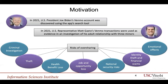Motivation. There are several anecdotal incidents wherein oversharing personal information online has proved to be very dangerous. For example, last year the US President Joe Biden's Venmo account was discovered using the app search tool, revealing a network of his private social connections and White House officials, posing national security risks. Similarly, last year US representative Matt Gaetz's Venmo transactions were used as evidence in an investigation of his adult relationship with three minors. In addition, there are many other news reports wherein oversharing information on Venmo or other social media platforms has led to theft, health benefit loss, etc.